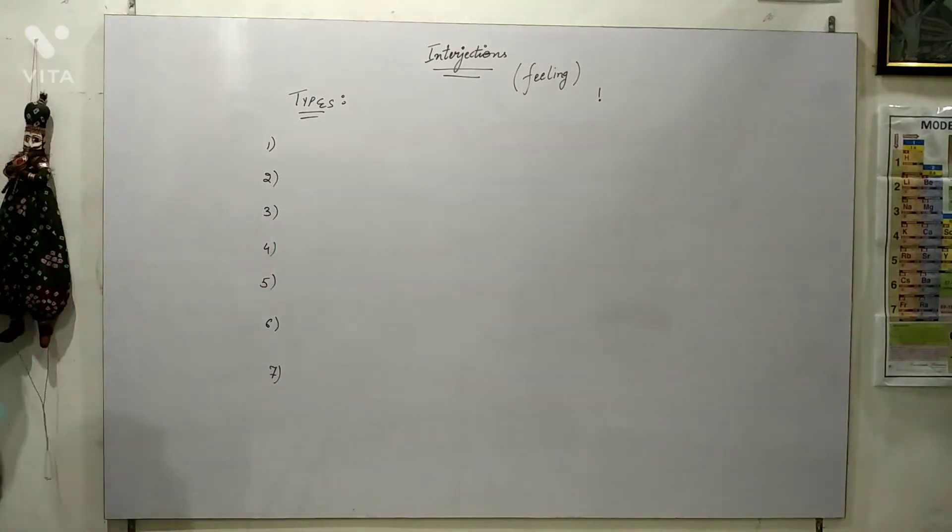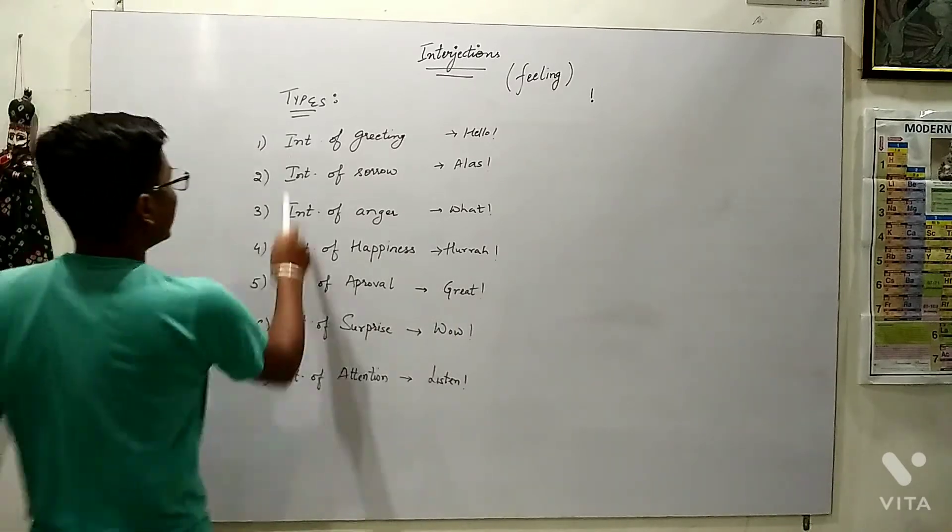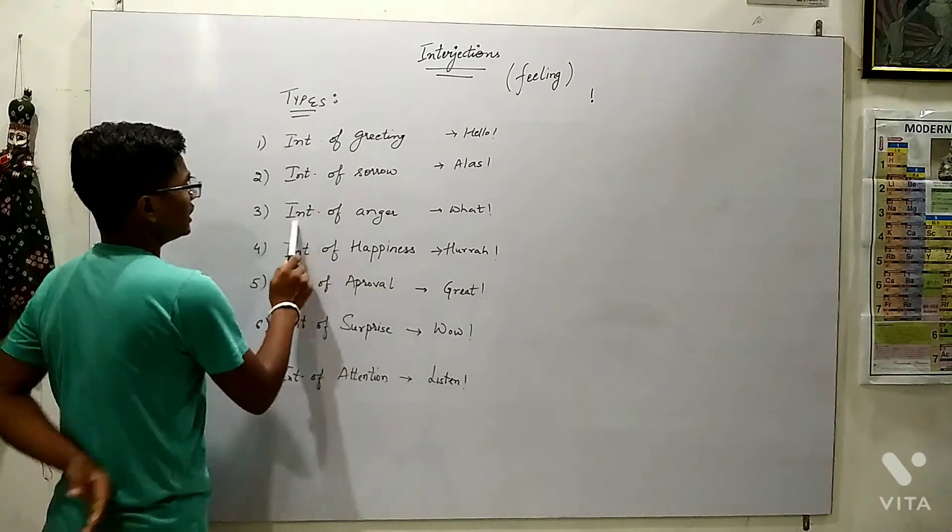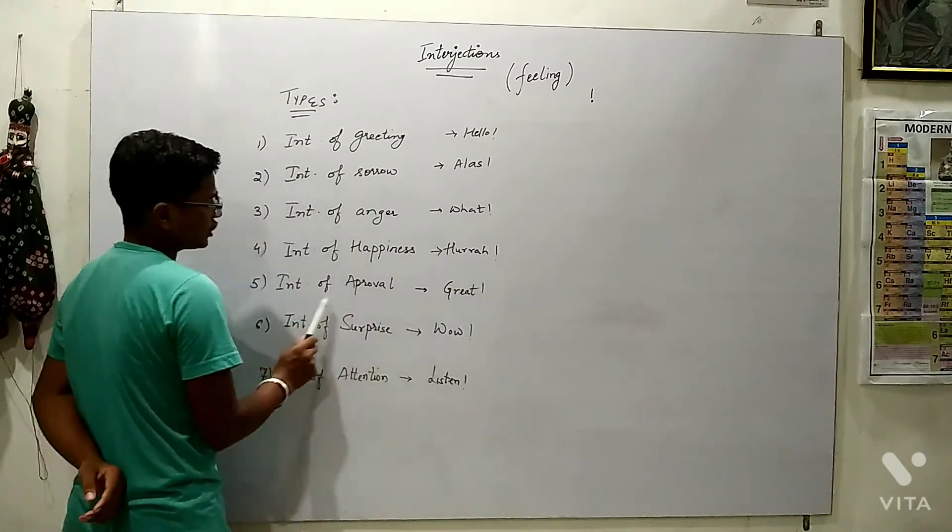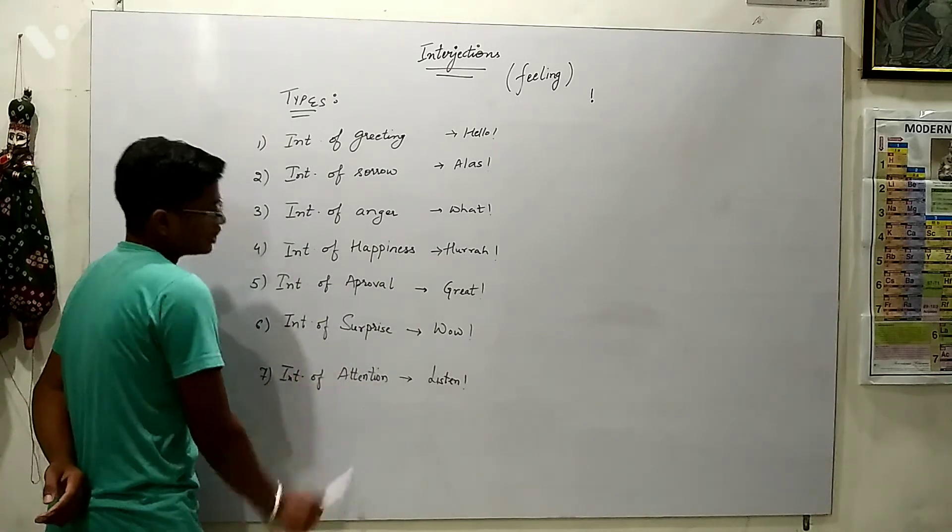So interjection has 7 types. The 7 types are interjection of greeting, interjection of sorrow, interjection of anger, interjection of happiness, interjection of approval, interjection of surprise, and interjection of attention.